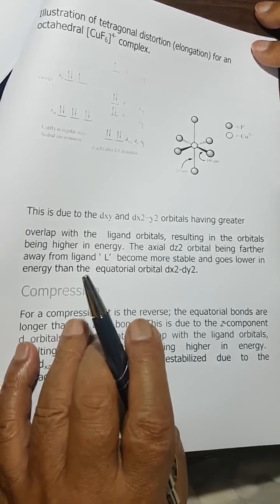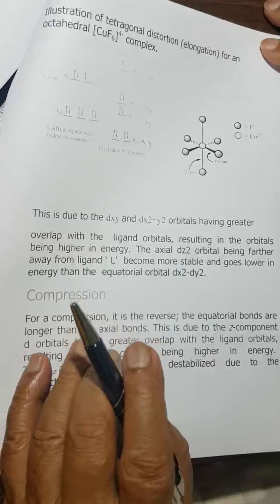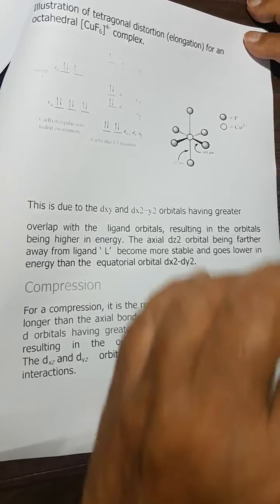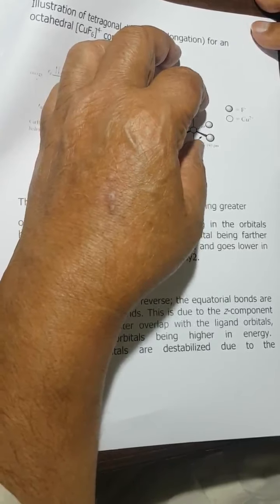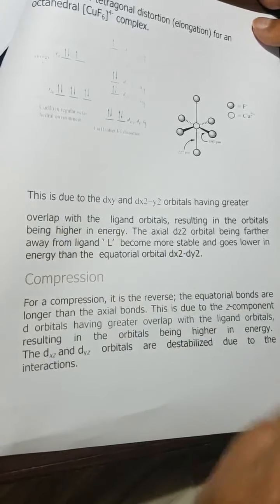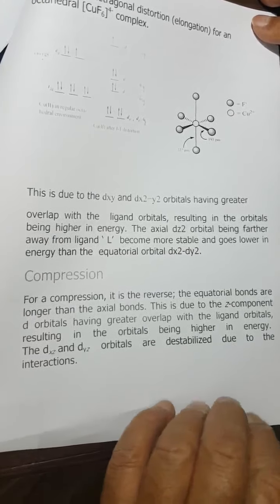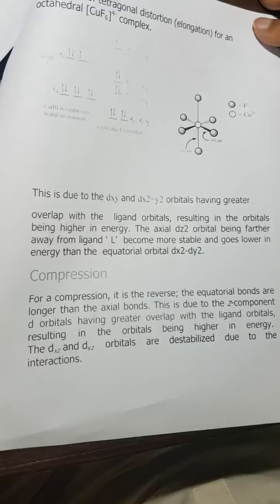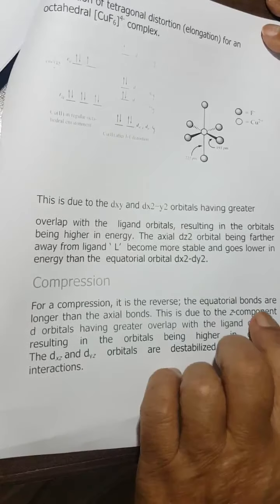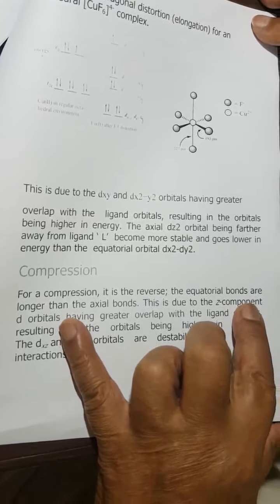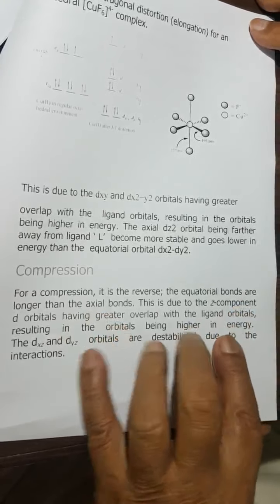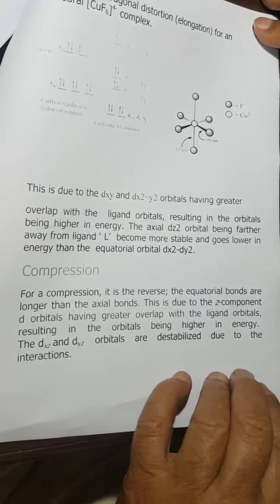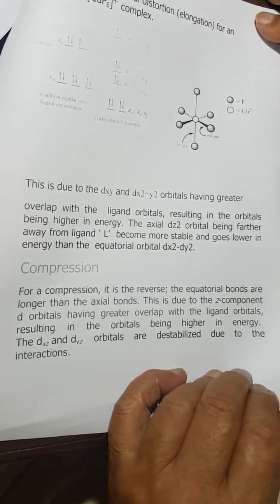In compression, the distance decreases. The dx²-y² orbital goes down in energy. The equatorial bonds are longer and stabilized compared to the axial bonds.